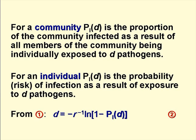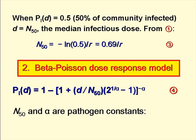We can rearrange equation 1 in terms of D, as shown on the slide, and we'll call this equation 2. When PID equals 0.5 – that is, 50% of an exposed community becomes infected – D equals N50, the median infective dose, which from equation 1 is 0.69 divided by R, and this is equation 3.